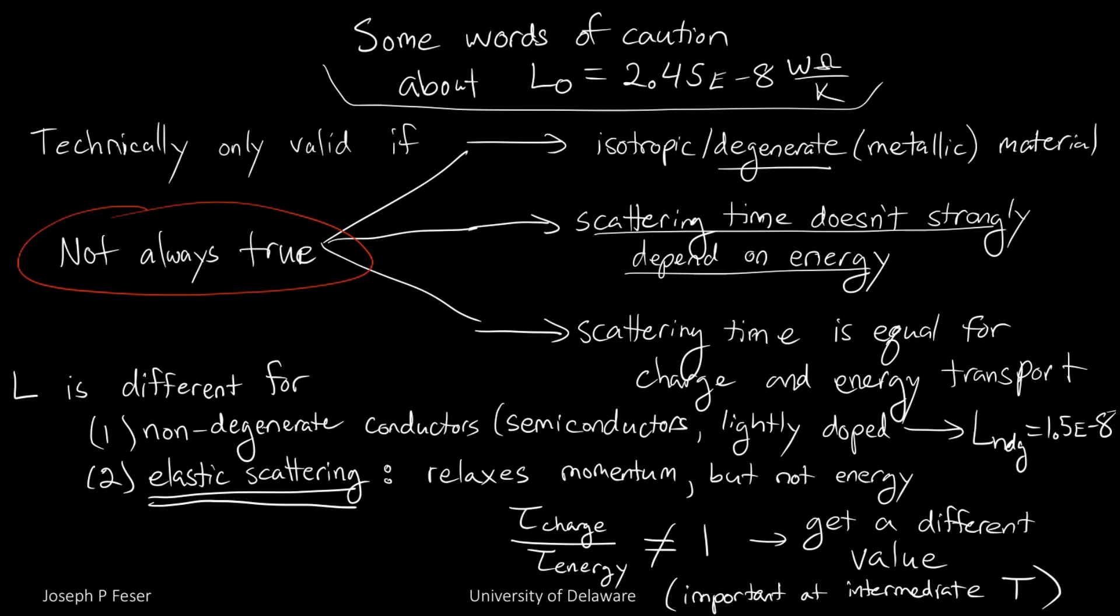This becomes particularly important at low temperature because, at low temperature, there aren't any phonons around for electrons to collide with. And so in that case, pretty much all interactions of electrons turn out to be elastic in nature. So they're bouncing off impurities and they typically don't have any way to lose memory of their energy in that case.